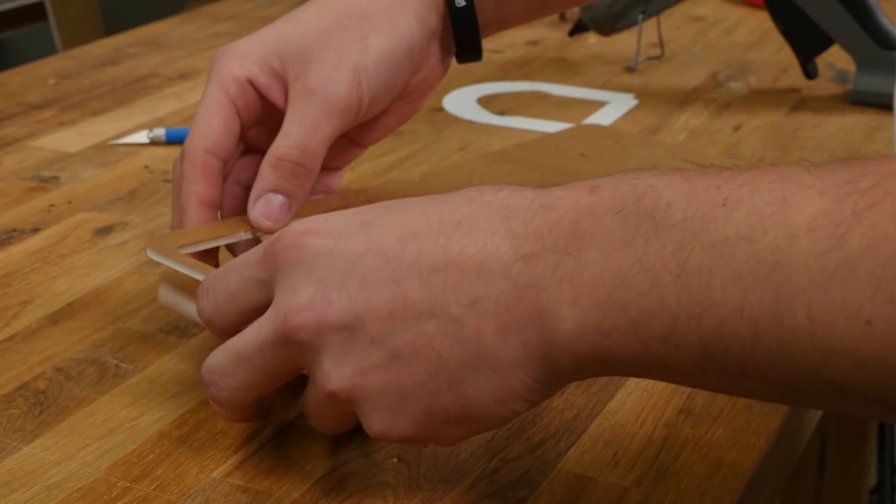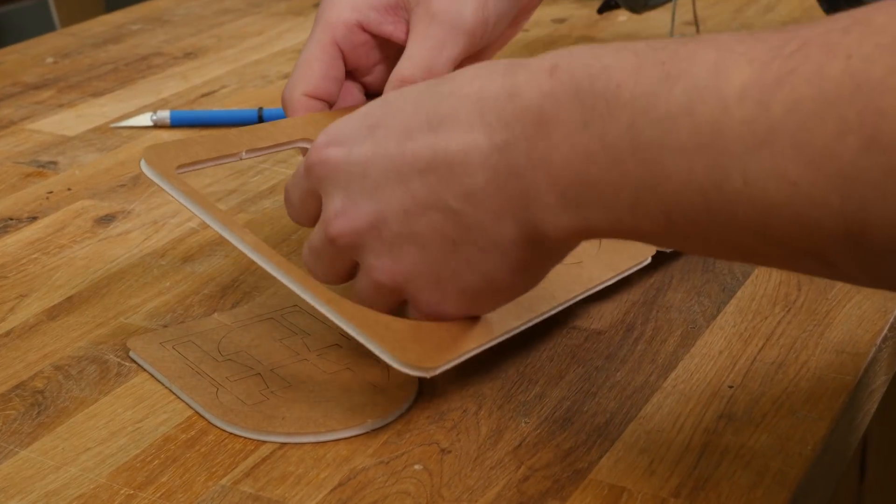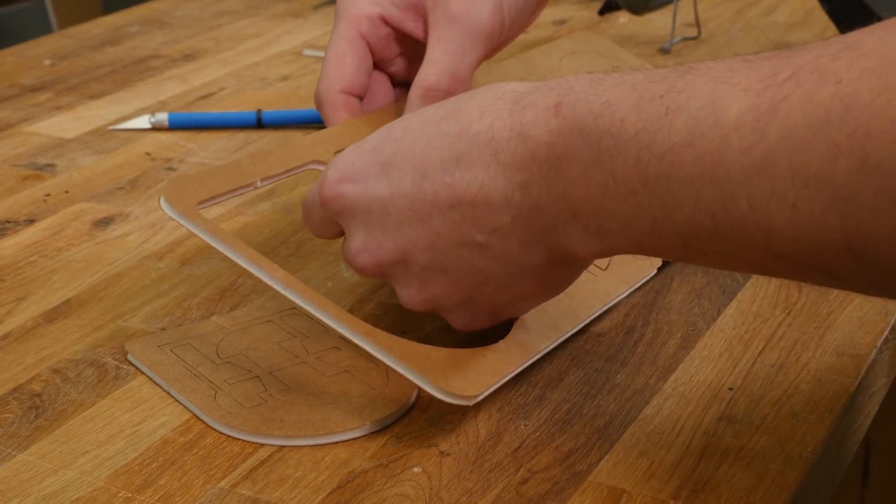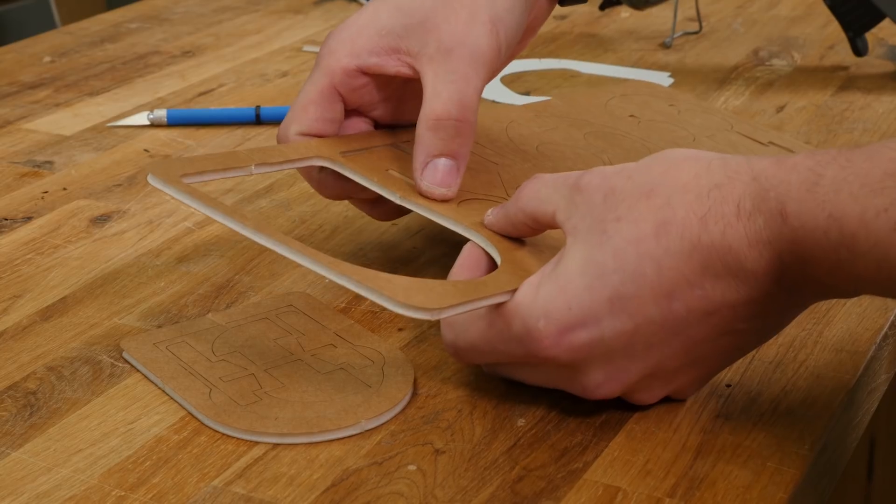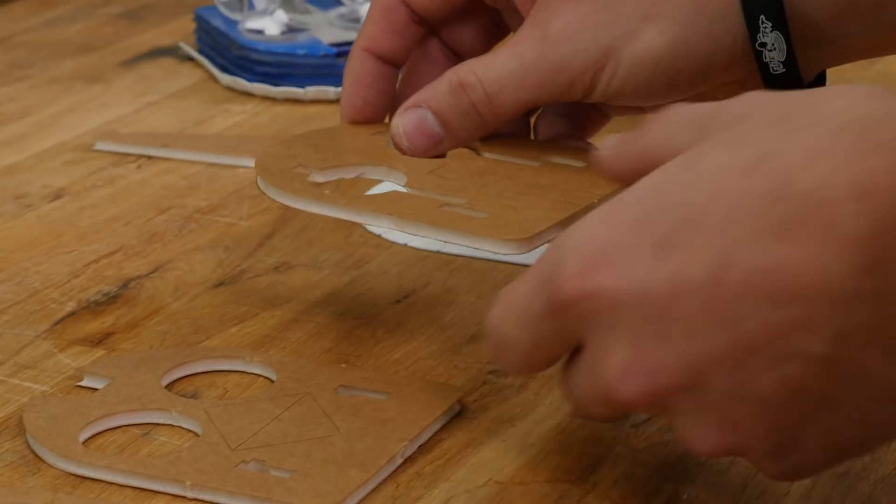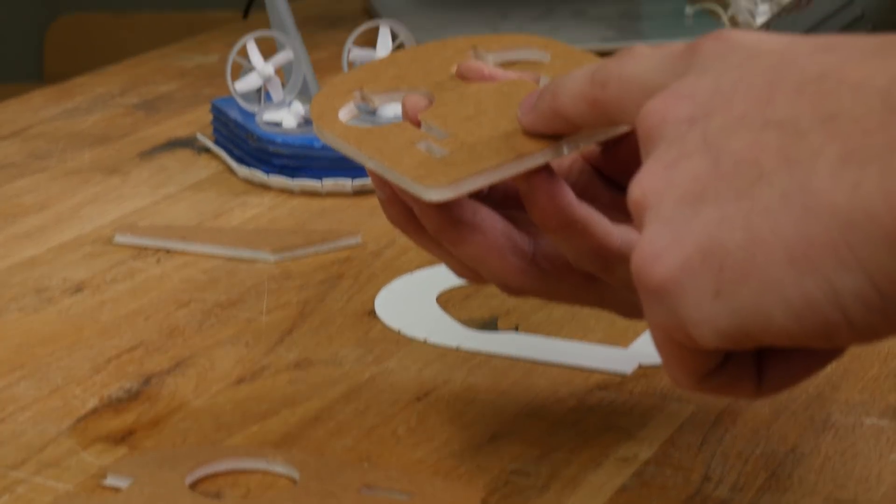The first step is to prepare your foam board. If you're building a speed build kit, this means simply removing the pieces. If you're building from scratch, follow the plans to cut it out. Note these two places where you don't want to cut through the back of the paper.